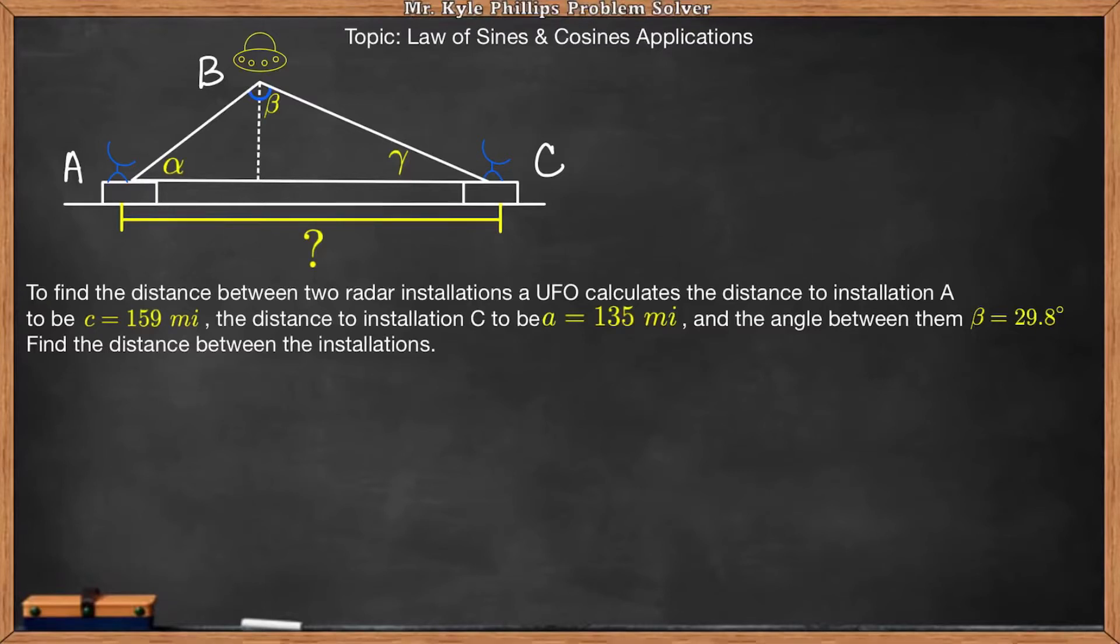Hey everybody. So in this problem, they ask us to find the distance between two radar installations. A UFO calculates the distance to installation A to be C equals 159 miles, the distance to installation C to be A equals 135 miles, and the angle between them beta equals 29.8 degrees.